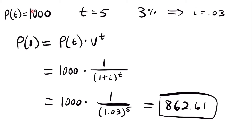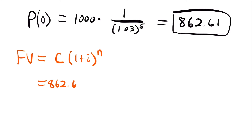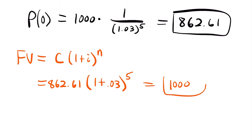I want to show you that this will give us $1,000 in five years. We found that the present value is equal to $862.61. Setting up our future value equation — the future value equals that initial deposit times one plus the interest rate to the number of periods N — we have $862.61 times 1.03 to the five years power, and if we plug this into our calculator we get $1,000. This makes sense because when we derived our present value formula, we started with the future value formula and just rearranged it.